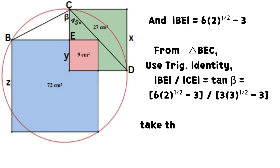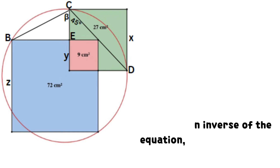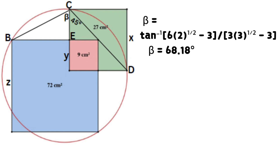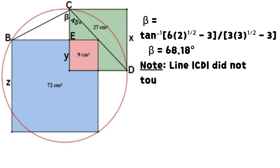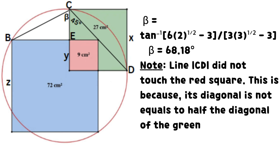From triangle BEC, use the trigonometric identity: the ratio of line BE to line CE equals tan beta, which equals the result shown on the screen. Take the tan inverse of the equation. Thus, beta = arctan((6√2 − 3) / (3√3 − 3)). Hence, beta = 68.18 degrees.